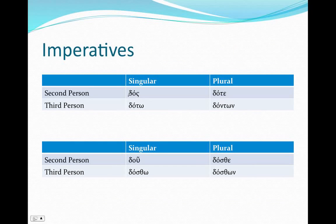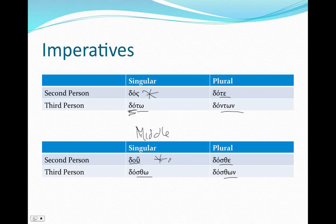In the imperatives, again the second person singular is a little odd: dos. Otherwise they're exactly what you'd expect — our simple stem plus our endings. And in the aorist middle, we've still got our simple stem: dostho, dosthe, dostho. The endings are consistent onto that simple stem — no theme vowel.